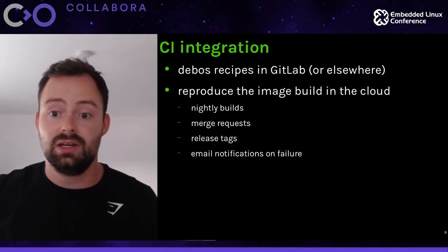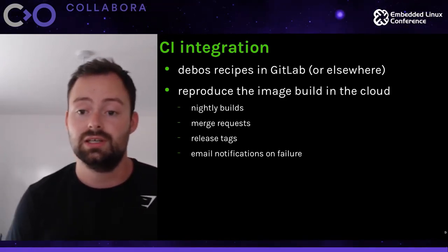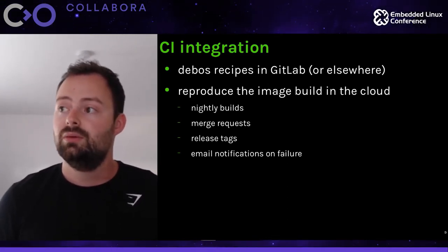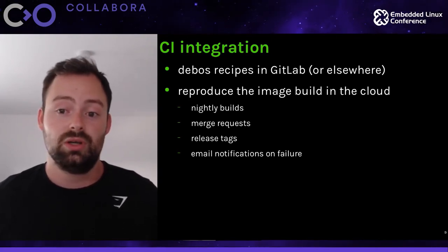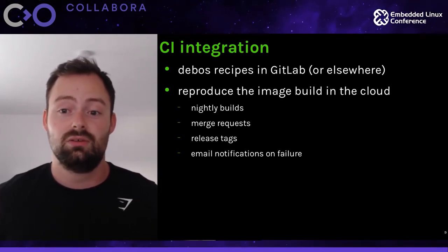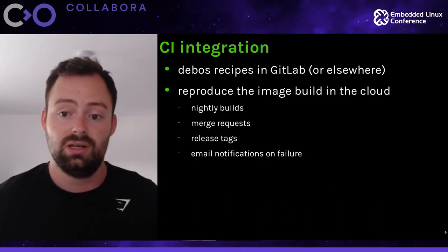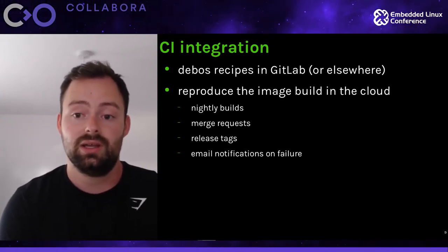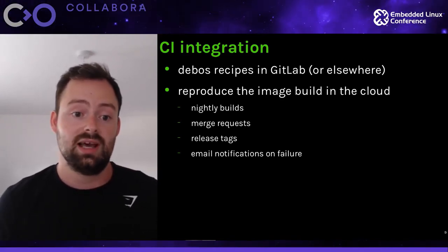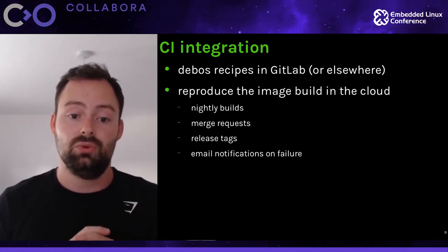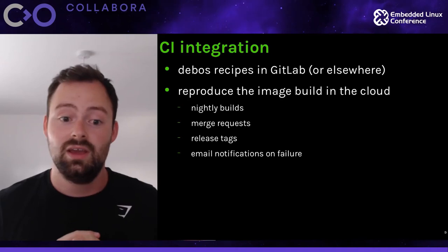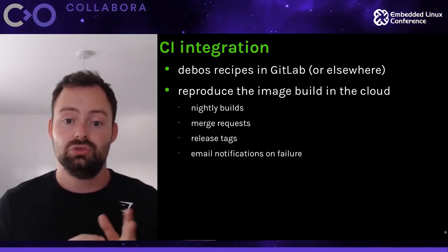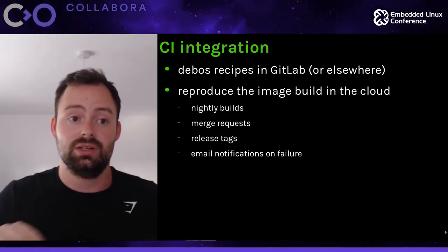Continuous integration is really important when building customer projects because you have a lot of different engineers working on the same product — having everyone download all the tooling and cross-compilers manually would be a mess. We decide early to create CI; we use GitLab, but you could use GitHub, Azure DevOps, or Jenkins. We push all the scripts up into CI early so you've got a really nice base to start with.